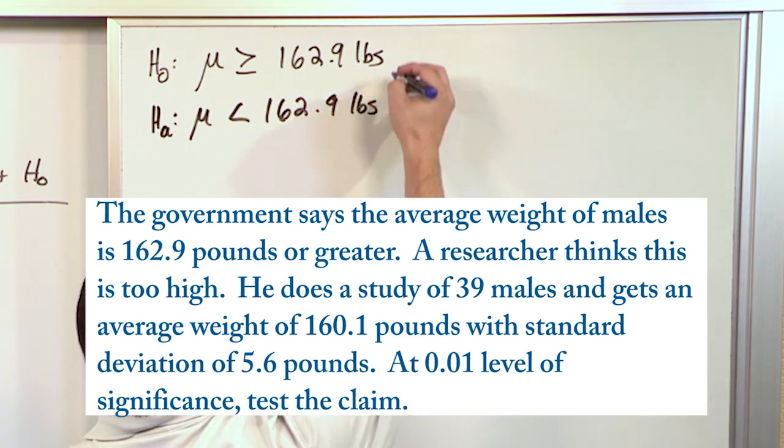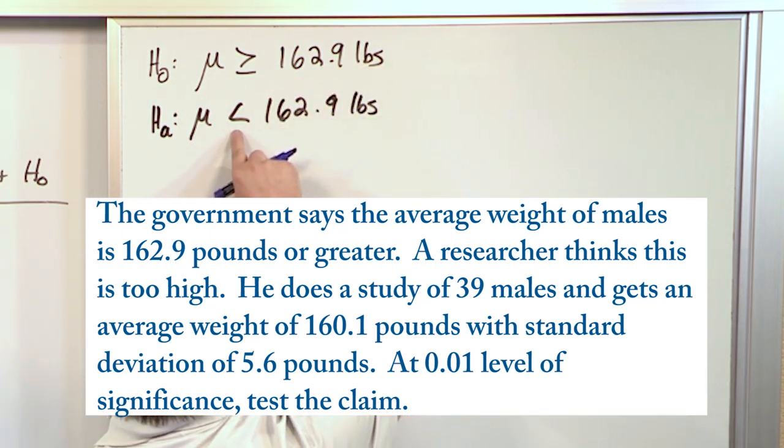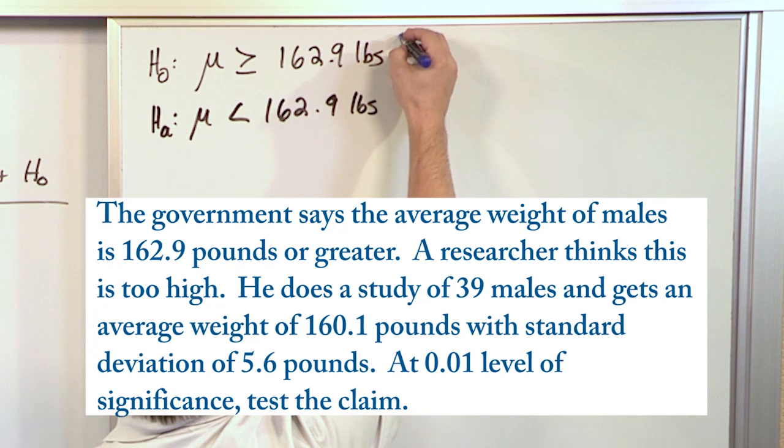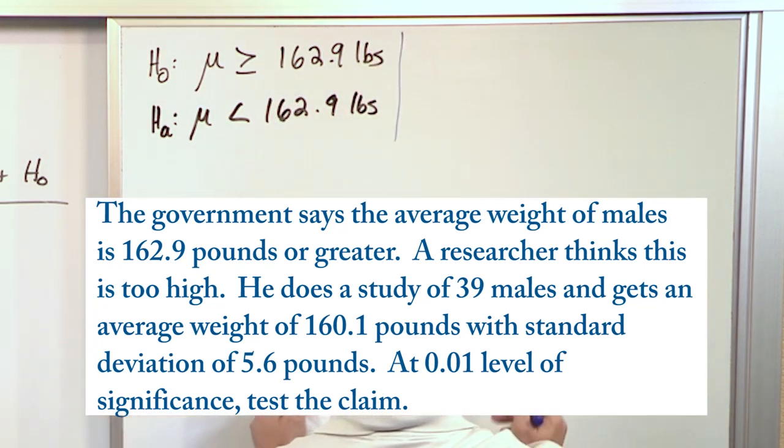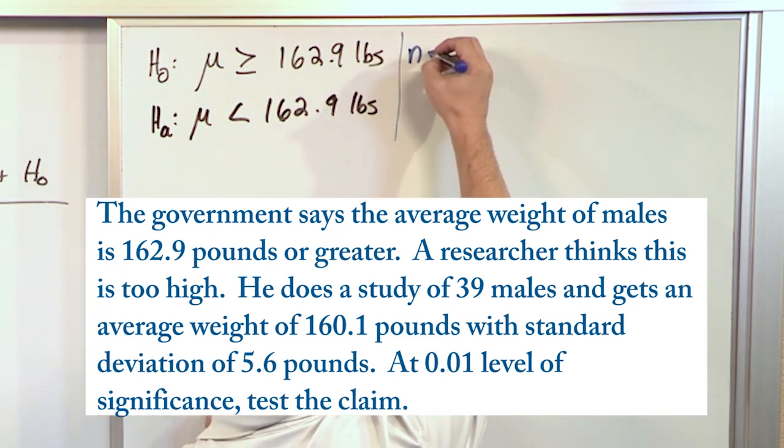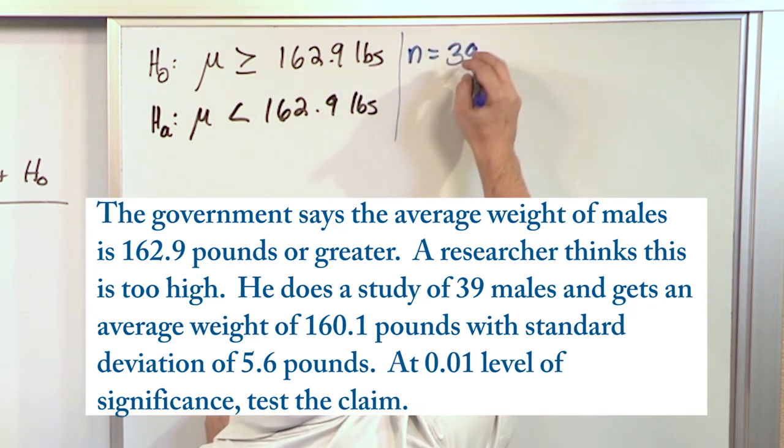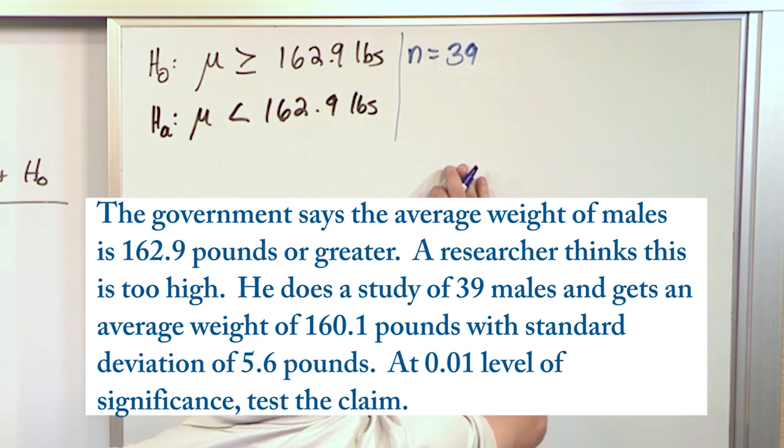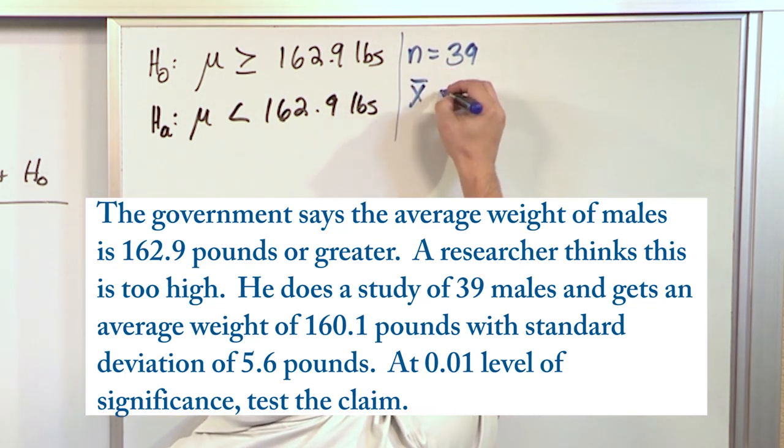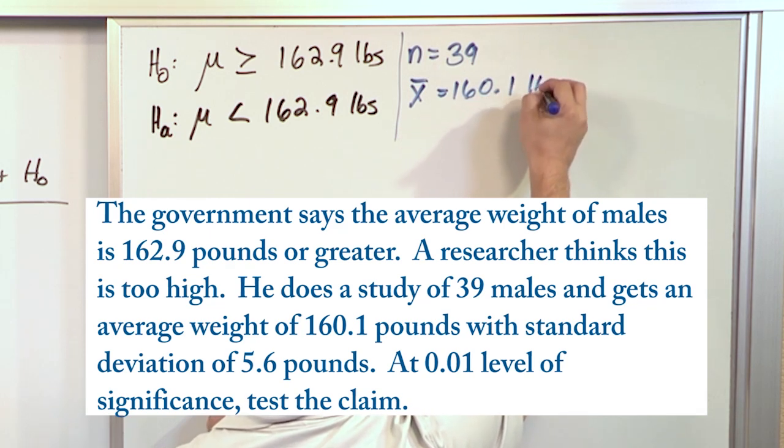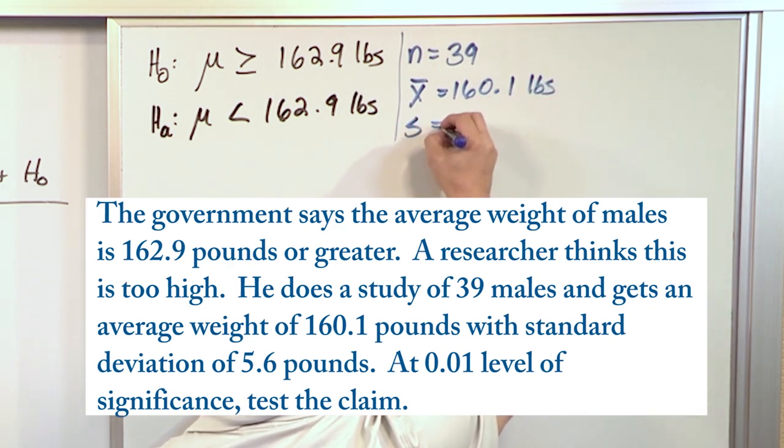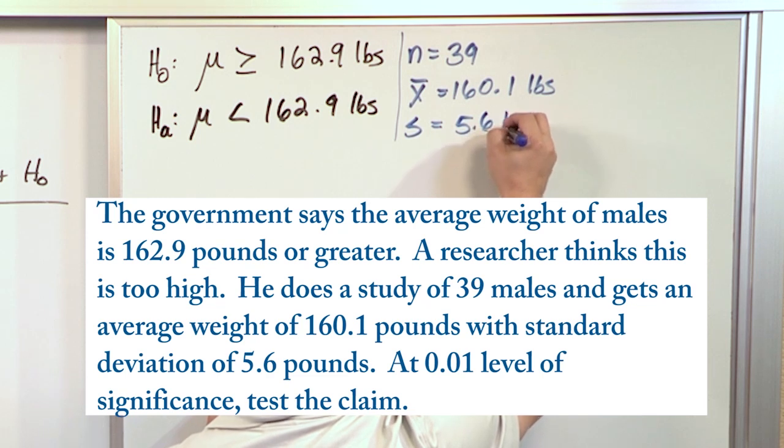So what does the researcher do? He thinks that this number was too big. That's why we have a left-hand arrow like this. So he grabs as many people as he can. He can only get 39 people to weigh themselves, and they get an average value of these people of 160.1 pounds and a sample standard deviation of 5.6 pounds.